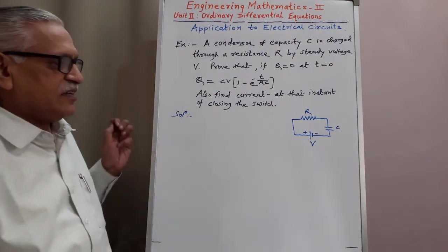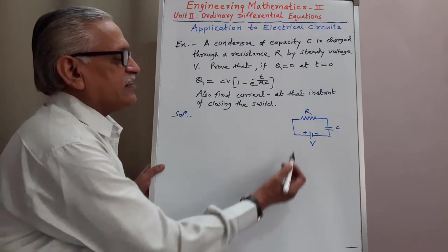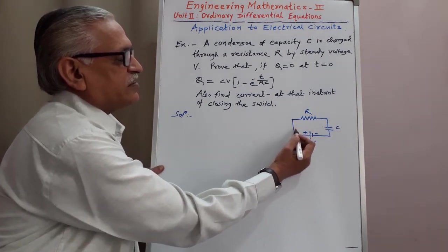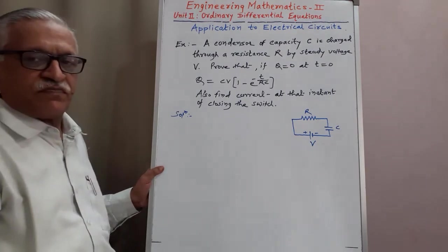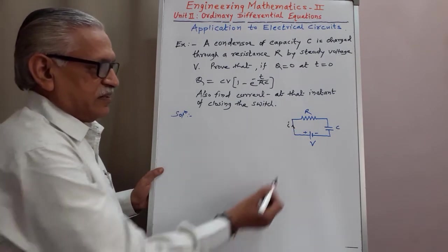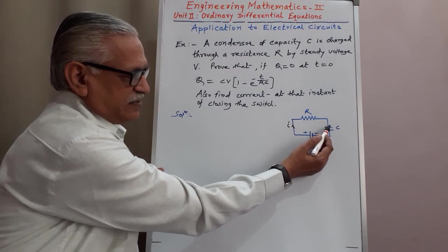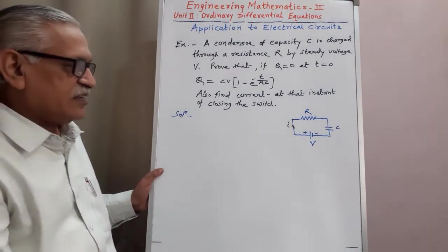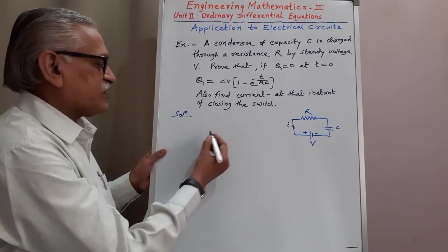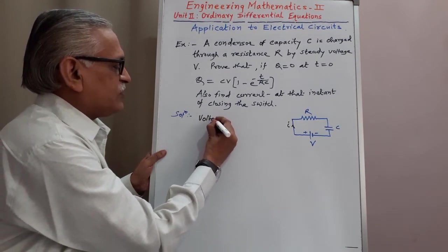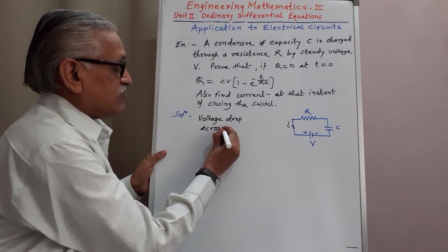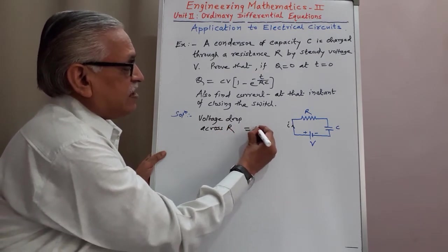To prove these two results, we consider an electric circuit containing two components — resistance R and condenser of capacity C — connected in series with a battery of voltage V, due to which current I flows through the circuit. The voltage drop across R is I times R.